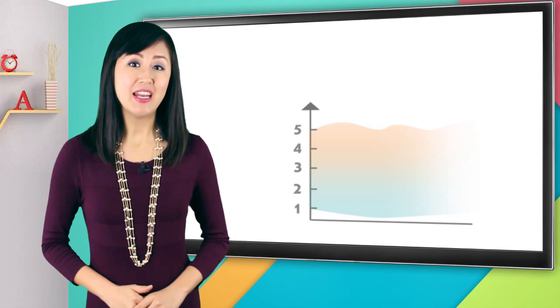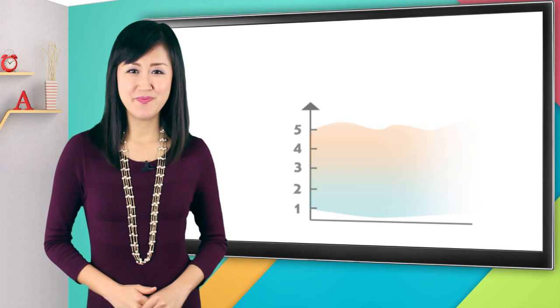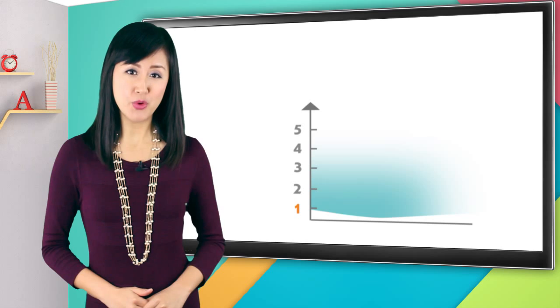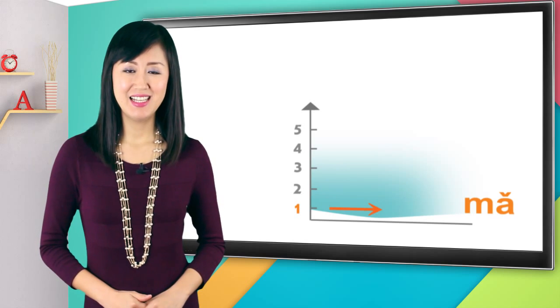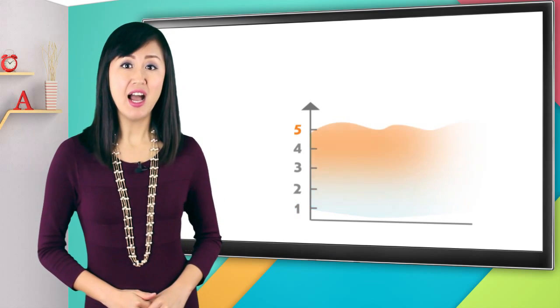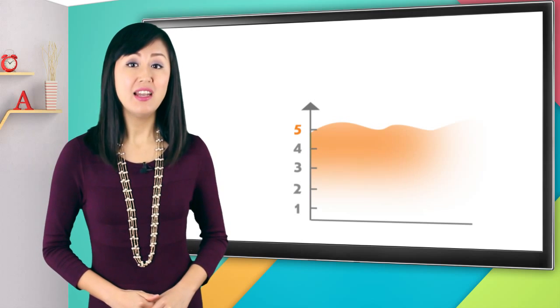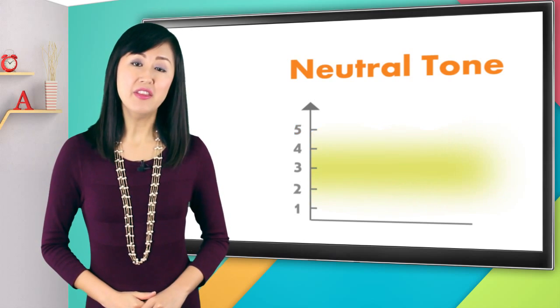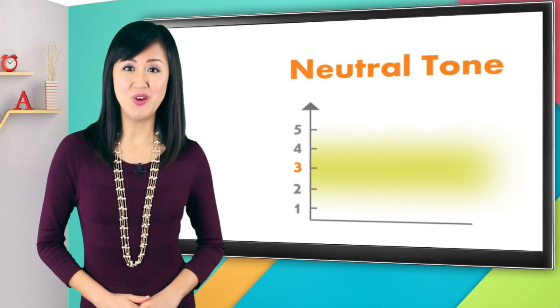Alright, let's take a look again at our tone chart. Remember, one represents the low part of our voice range, like in the third tone 'ma'. And five represents the high part of our voice range, like in the first tone 'ma'. The neutral tone is somewhere in the middle, like a three or so on the chart.